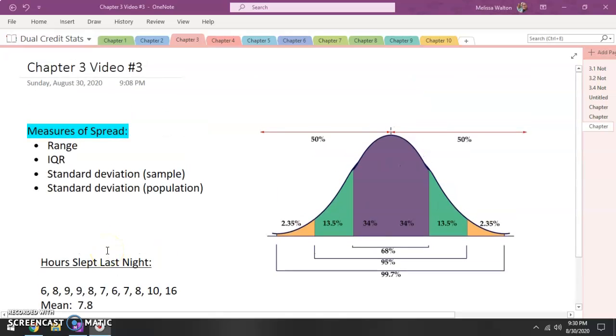Hello, this is chapter three video number three. In the last video we started to discuss measures of spread. We talked about your range and we also talked about IQR. This video we are going to talk about standard deviation, and we're actually going to talk about two separate standard deviations: your sample standard deviation and then also your population standard deviation.